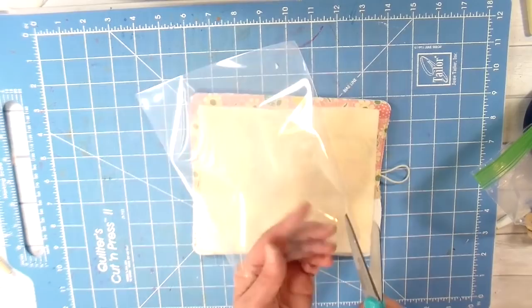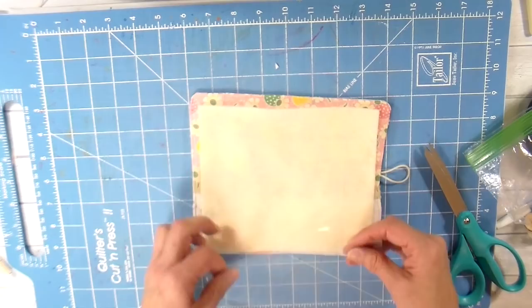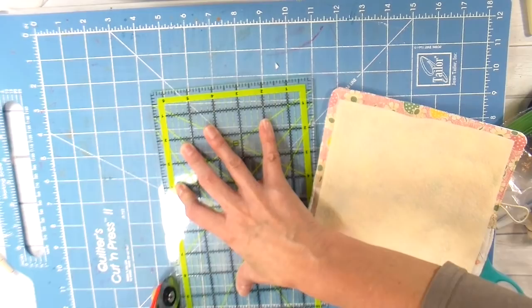It's turning out so cute, I just love it, and then I'll be topstitching all the way around. For the little page, this is just a piece of craft felt, and I cut that a little bit smaller than the outer cover, about a half inch smaller all the way around.